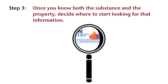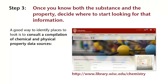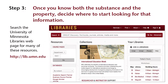Step 3: Once you know both the substance and the property, decide where to start looking for that information. Once you have more thoroughly identified the substance and property of interest, the final step is selecting the best resource. A good way to identify places to look is to consult a compilation of chemical and physical property data sources. Most of the books and databases listed in these guides are available at the University of Minnesota Libraries.